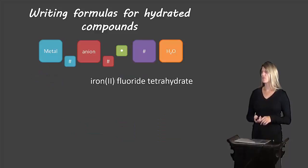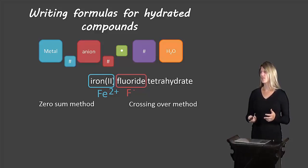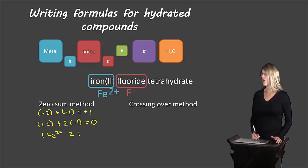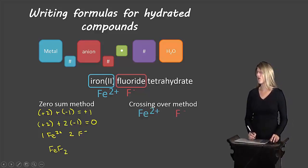So let's take a look at an example here. Iron(II) fluoride tetrahydrate. We start off with iron as our metal. We know that has a symbol Fe and because it's iron 2 it has a 2 plus charge. The fluorine has a symbol F with a 1 negative charge. Now to figure out the formula we can use either zero sum or crossing over. If we use zero sum we know there's a 2 plus charge on the iron and a 1 negative on the fluorine which equals plus 1. We want this to equal zero so we need two of the 1 negatives. So that means we need one iron 2 plus and two fluoride ions. So we end up with FeF2.